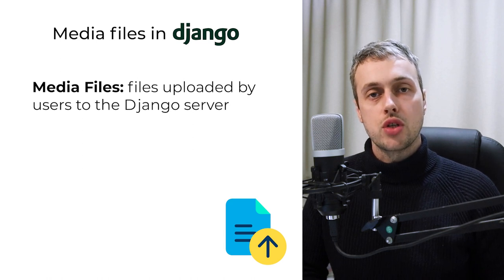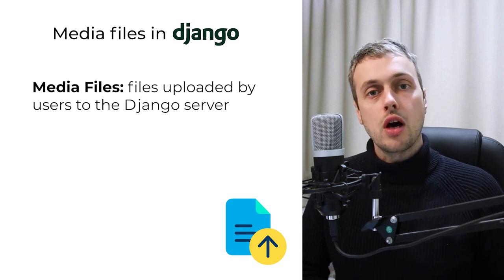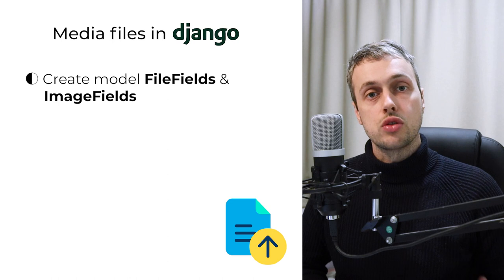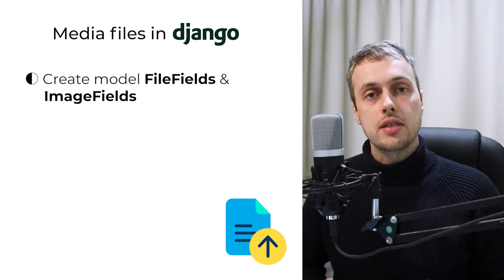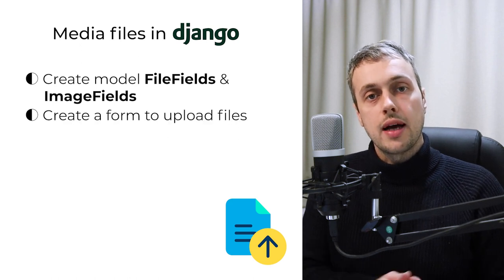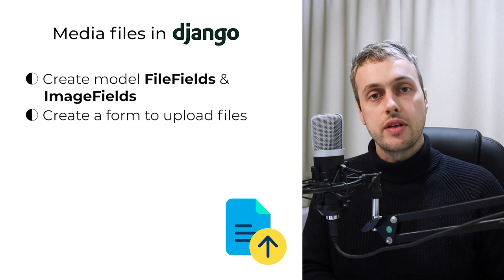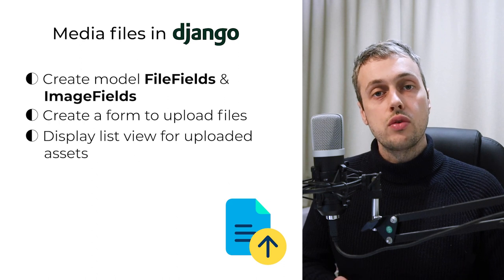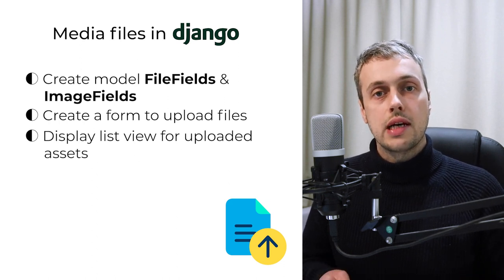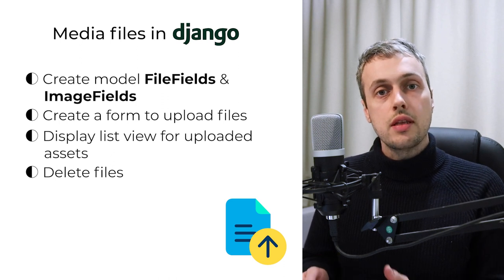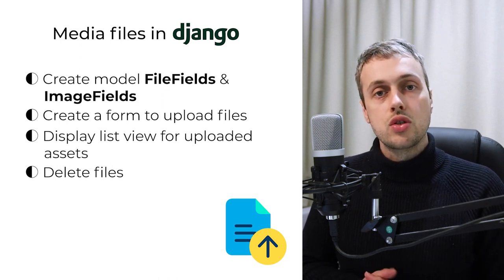In this video we're going to dive into media files in Django and show how users can upload files to our Django server. We'll learn how to create file fields and image fields in our Django model classes and how these track where images are stored by storing a path in the database. We'll create a form with a file input, display it in a Django template, build a list view of uploaded assets, and finally show how to delete records from the database and delete the associated files from our media directory.